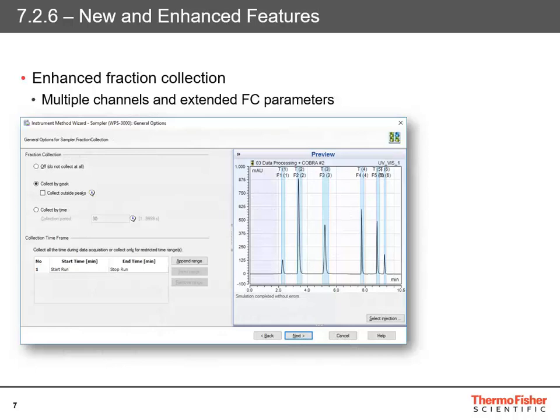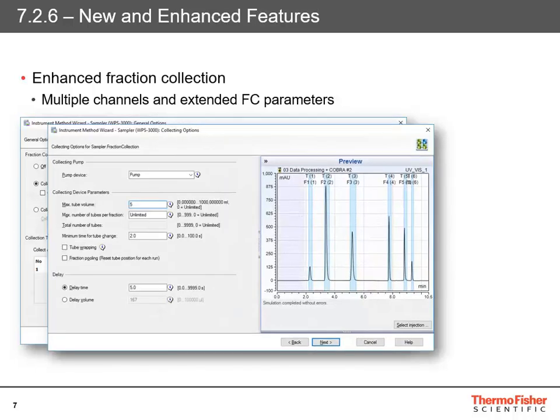On the left-hand side we're collecting by peak. On the right-hand side it's showing you exactly which peaks are going to be collected, which tubes they'll be in, and which fraction they're part of. The next step of the wizard sets things like maximum tube volumes and delay time — the time it takes from the peak to get from your flow cell to the point where it drips out into your collection vial. Those also affect the number of fractions per tube, and that would update in the preview if a fraction went over two tubes.